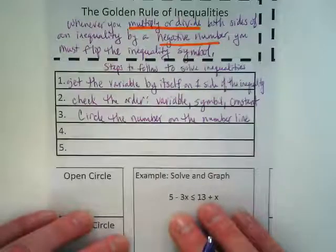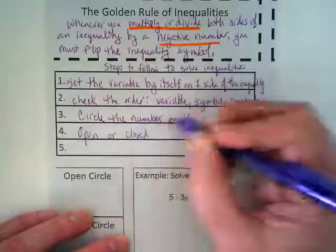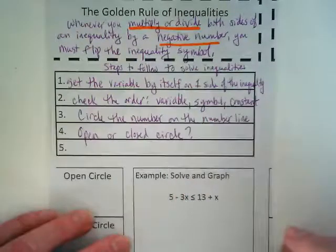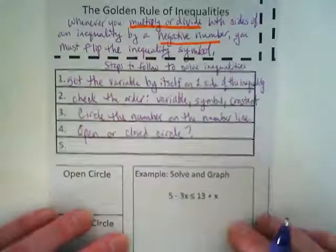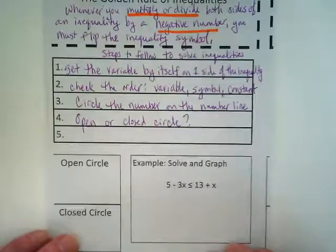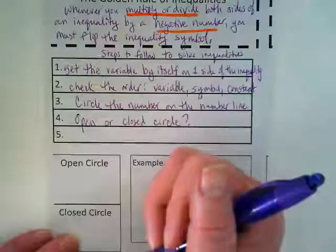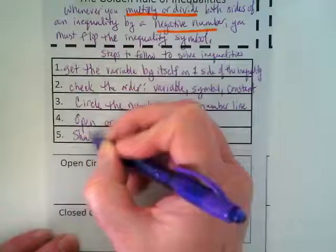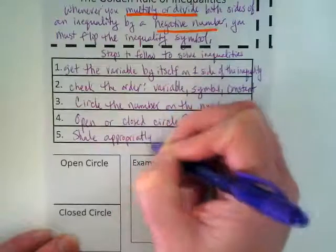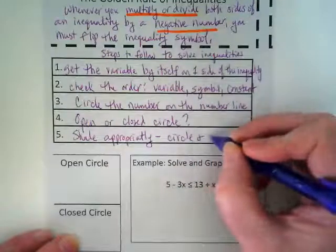Step four is a question: open or closed circle? Step five is shade appropriately. That means the circle and the line or the arrow.